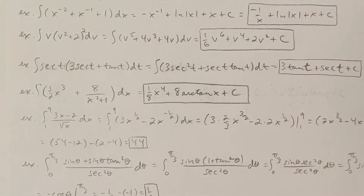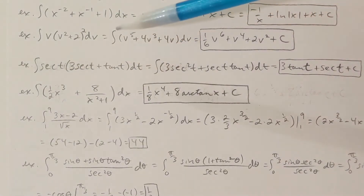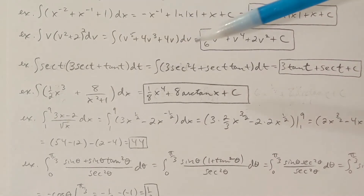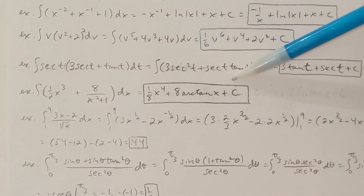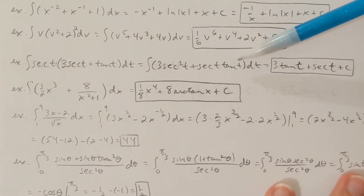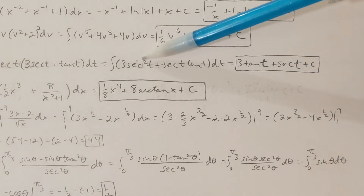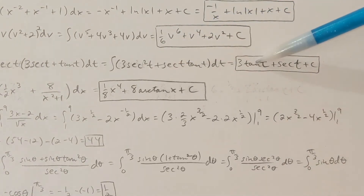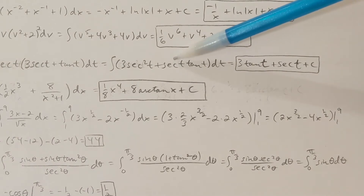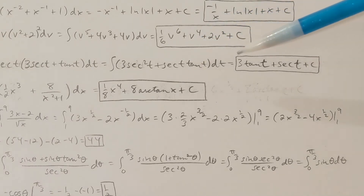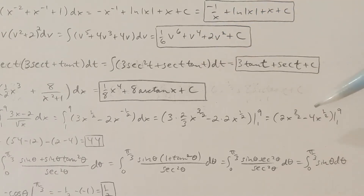Here's another one. Again, I want to simplify first. In this one, let's distribute secant t into these two terms. The antiderivative of secant squared t is tangent t. The antiderivative of secant t tangent t is secant t, since the derivative of secant t is secant t tangent t. And then plus c at the end.